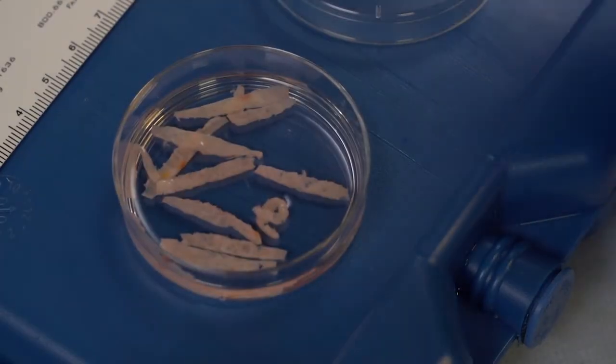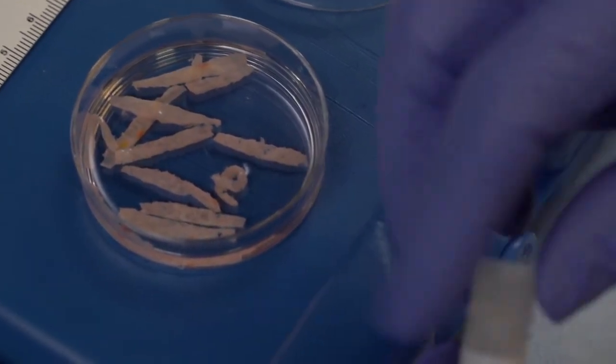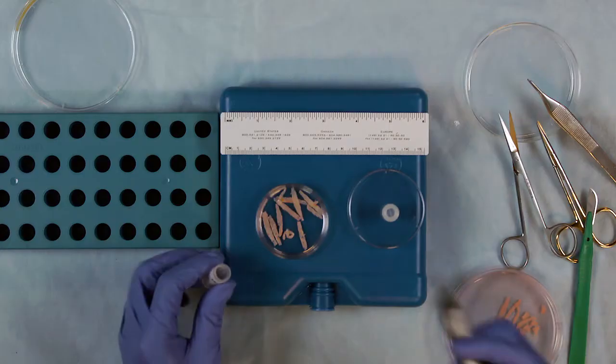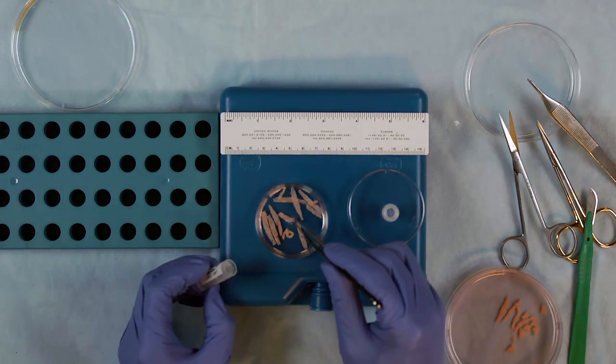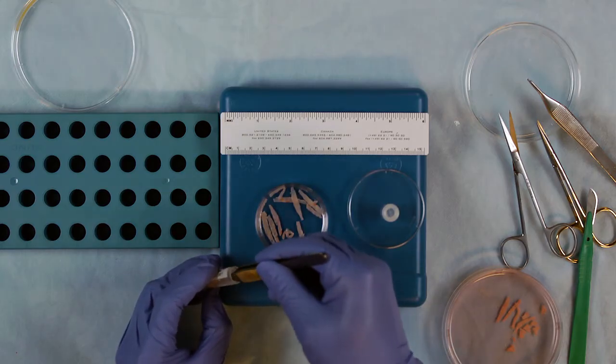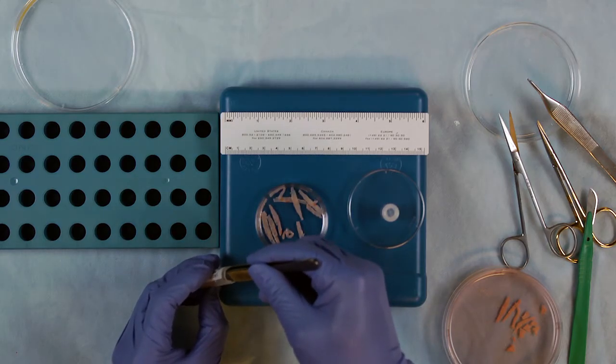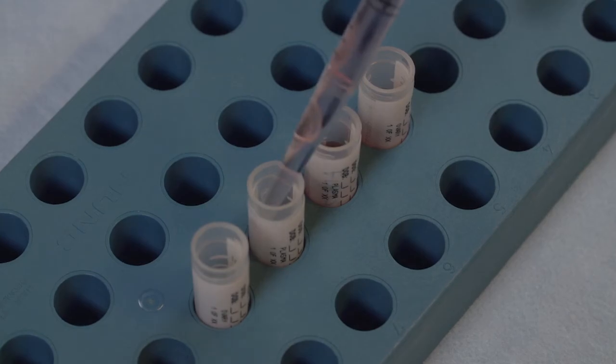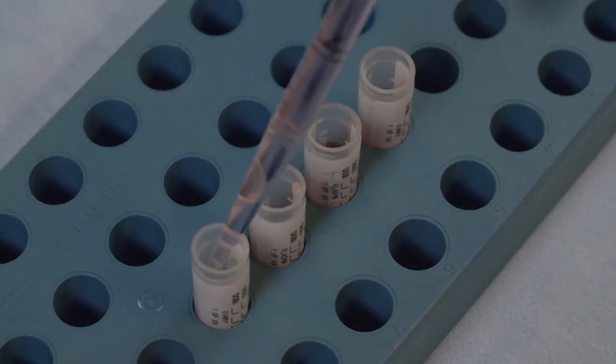Load the tissue into the vials preloaded with 0.8 milliliters of cryomedia, approximately one to two pieces per vial following the protocol that's described in the NPC manual. Then add more cryomedia so that the final volume is up to 1.5 milliliters.